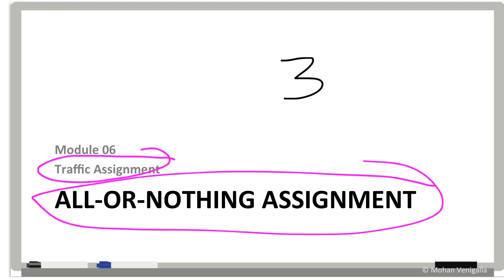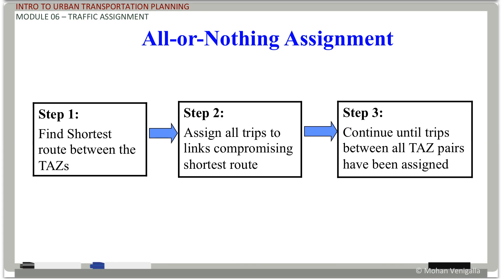So for some reason I think the name gives it away to you. What we do after finding a path from zone X to zone Y is decide how to put the trips on this path. All or nothing basically means you put all those trips on that path or nothing at all.